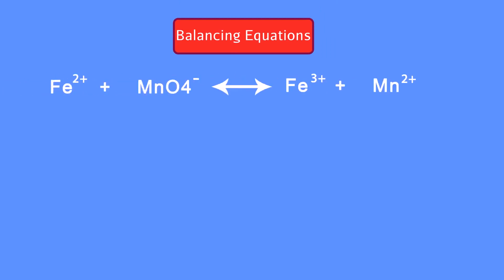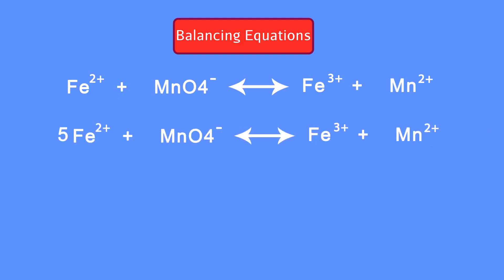One: write the unbalanced equation for the reaction in ionic form. Two: balance the number of atoms that are oxidized or reduced. Three: determine the number of electrons lost or gained for each oxidized or reduced atom. Four: rebalance the number of atoms reduced or oxidized.